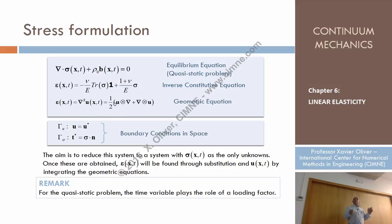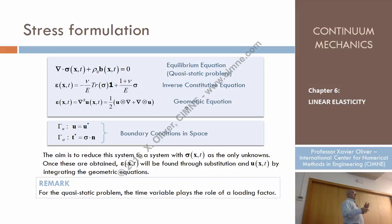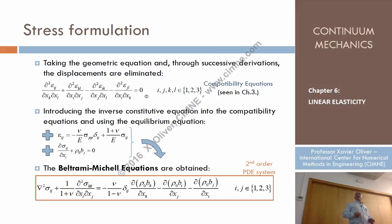For practical use, we don't start exactly from the geometric equation — we start from the compatibility equation. Remember these compatibility equations that we derived in chapter 2, when we talked about the conditions that have to be fulfilled by the strains in order to be compatible with the geometric equations. These equations are typically a lot: one possible expression gives 81 equations — 3×3×3×3 — but there are only 6 of them which are independent.